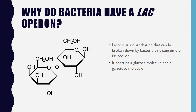For most bacteria, glucose is the preferred carbon source. However, when glucose is unavailable, bacteria must turn to other sources. Lactose is a disaccharide containing a glucose and a galactose. If a bacterium has a lac operon, it will be able to break down lactose into its component parts to be used as a carbon source.